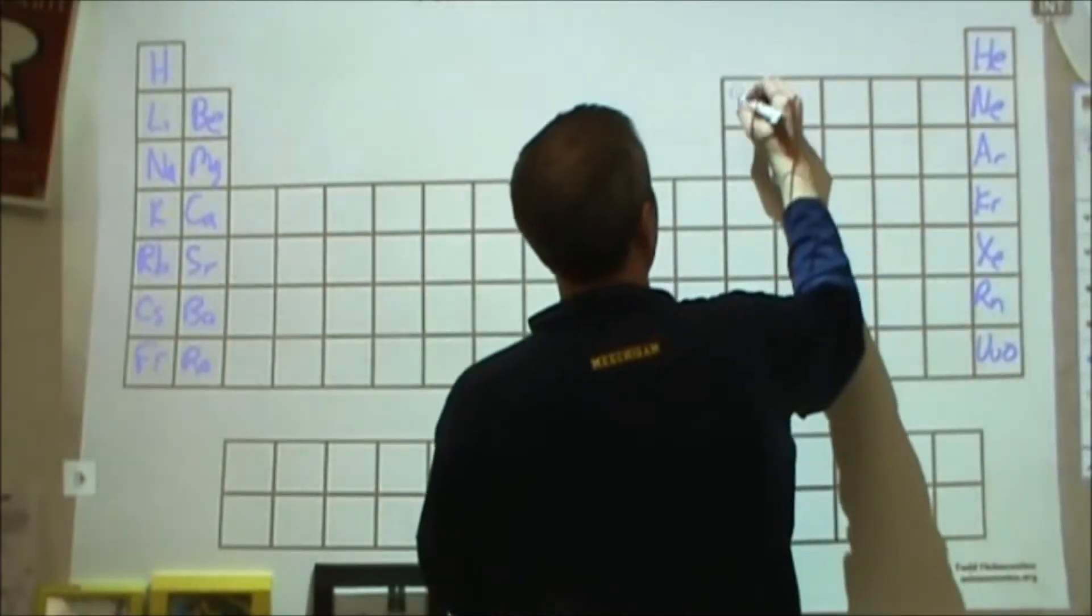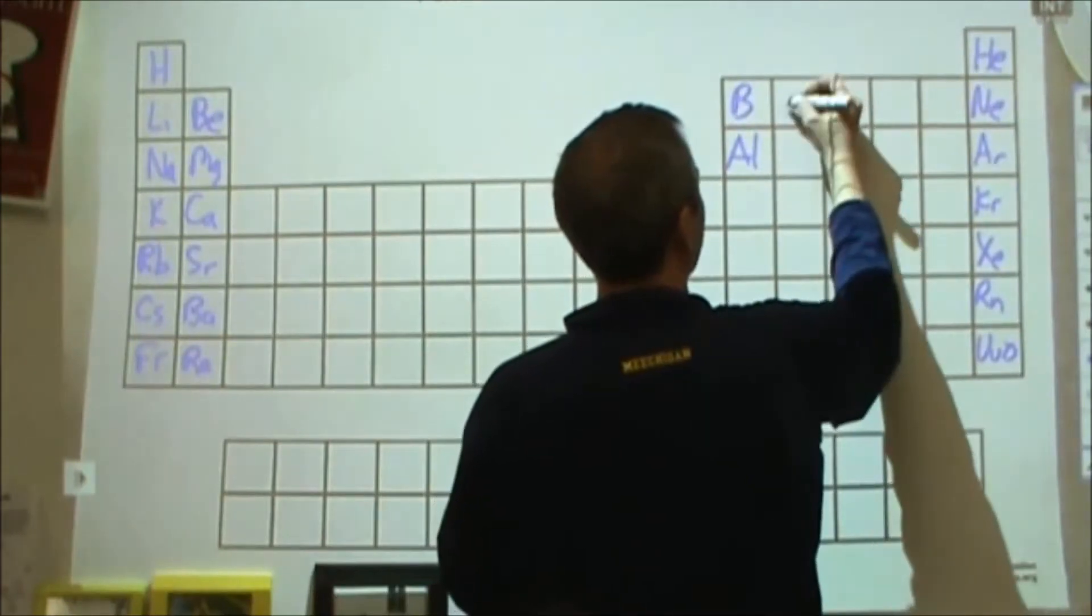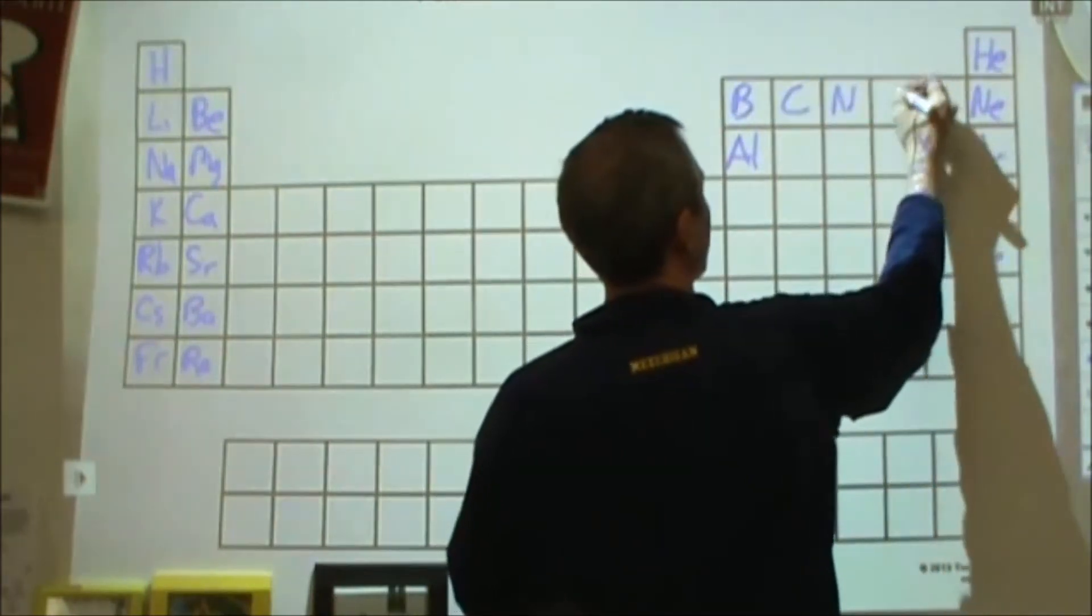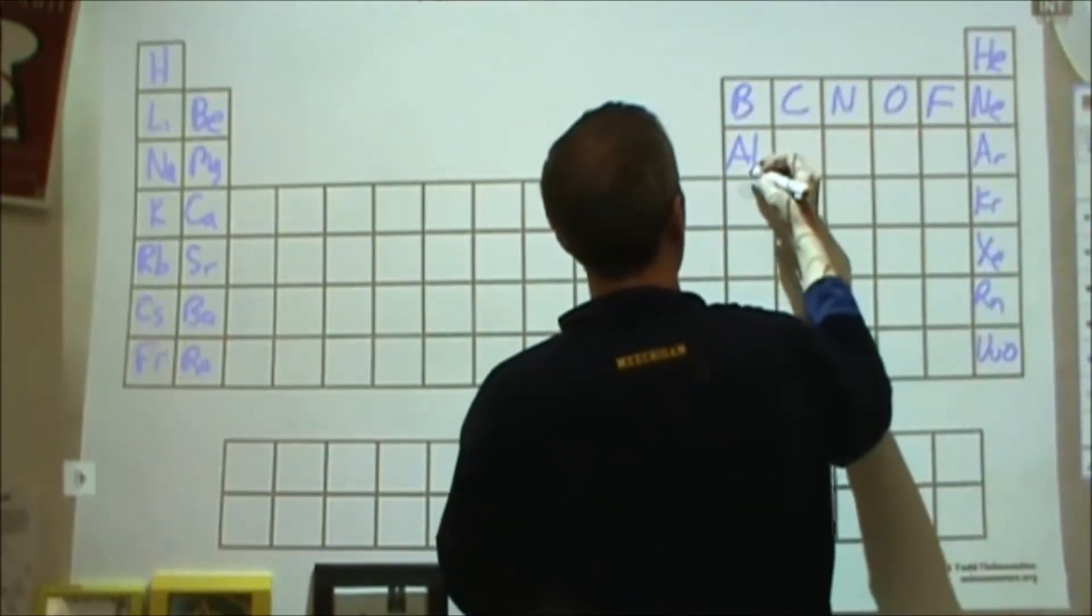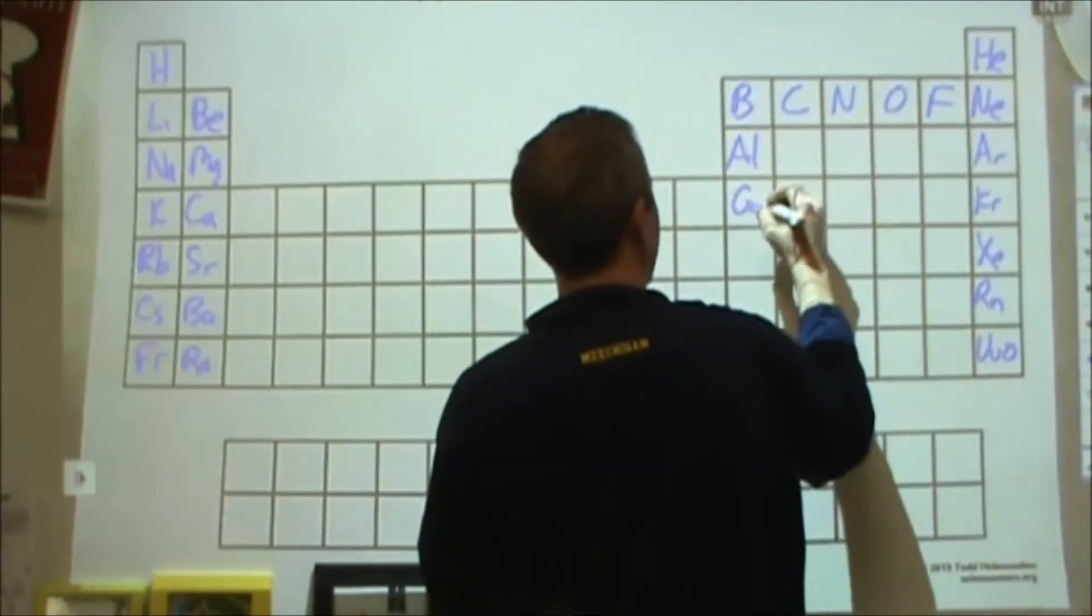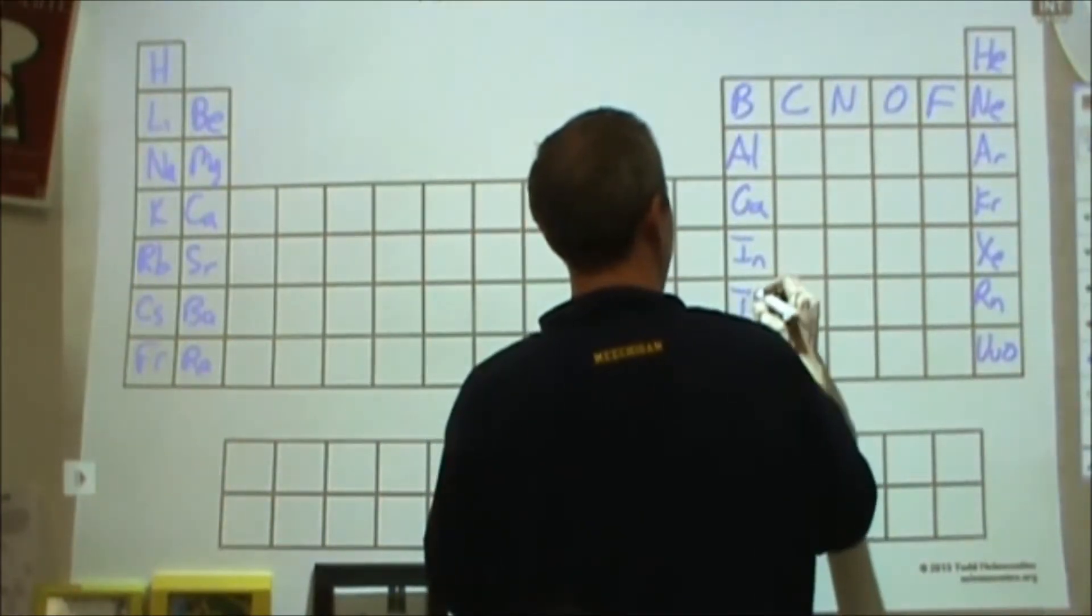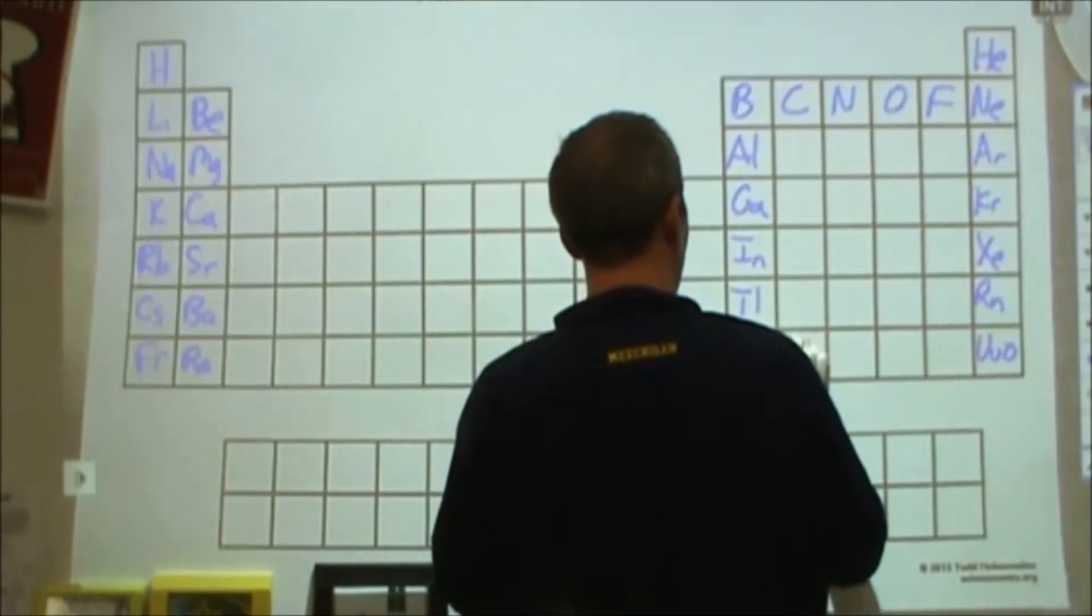And then here we've got boron, aluminum, and then going across carbon, nitrogen, oxygen, fluorine. Under aluminum we've got gallium, indium, and thallium before ununtrium.